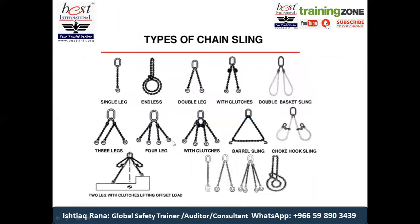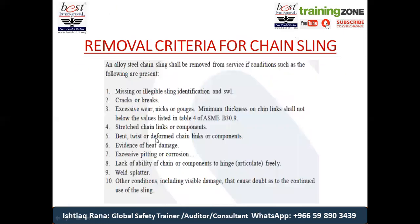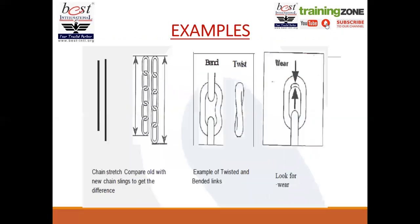Types of chain slings include: single leg, endless, double leg, with clutches, double basket sling, and three-leg configurations. Any type of cracks, breaks, wear and tear, stretched slings, bends, twists, evidence of heat damage, excessive corrosion — especially in oil and gas environments where chemicals create rust and corrosion — are not acceptable. No bent, twisted, or worn chains are acceptable. Complete, straight, good quality chain slings with clear visible inspection marks must be maintained.